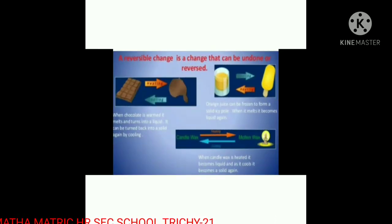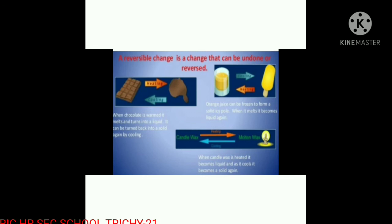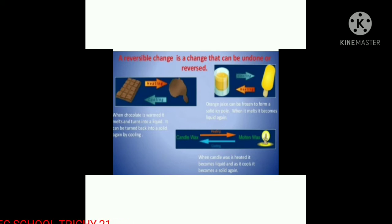A reversible change is a change that can be undone or reversed. The changes which can be reversed are called reversible changes. For example, when chocolate is warmed, it melts and turns into a liquid, and it can be turned back into a solid again by cooling.